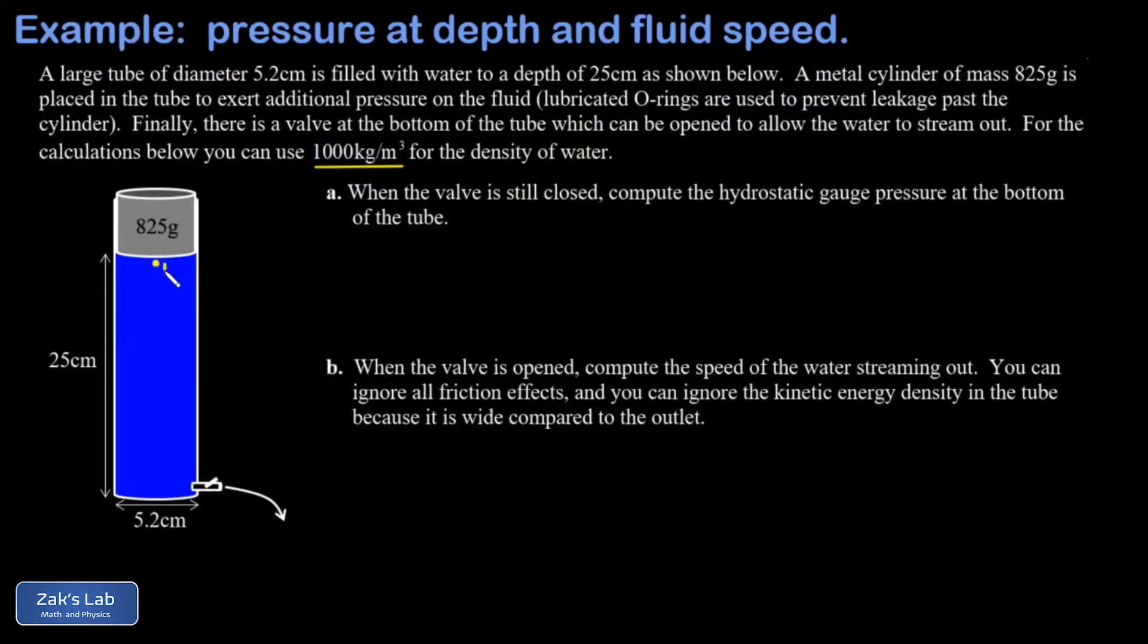I'm gonna call that point number one at the top of the water column. We're working in gauge pressure through this entire problem, so I could label the pressure at the top of the metal cylinder as atmospheric pressure, but in gauge pressure units that's zero. In part A we're interested in computing the hydrostatic gauge pressure at the bottom of the column, point number two.